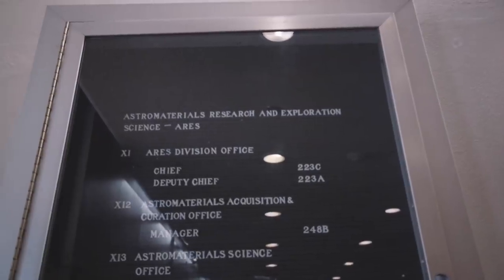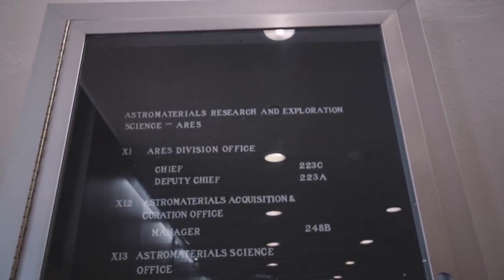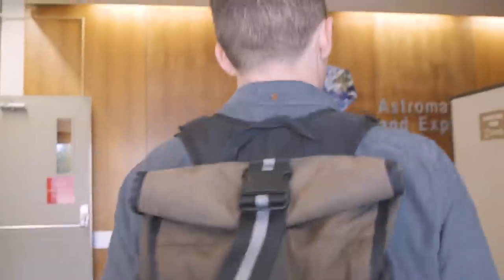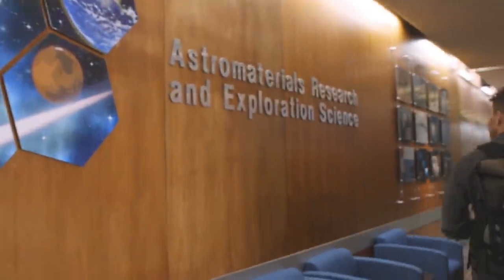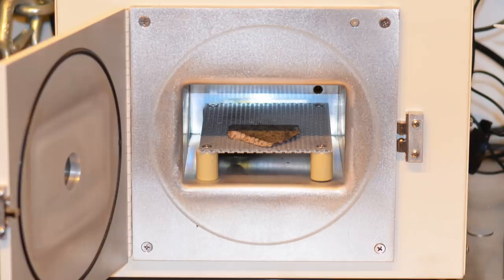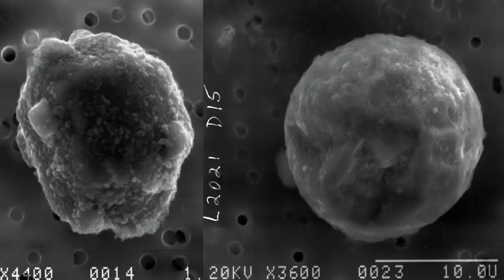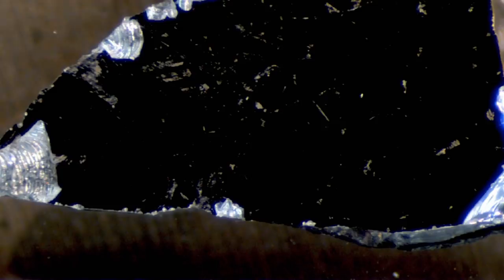Mike works within NASA's Astromaterials Research and Exploration Science Division. It's a very nondescript building at Johnson, but inside is maybe the ultimate cabinet of curiosities. Materials from the moon and Mars, dust from comets, flecks of asteroids, atoms from the sun.